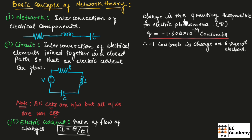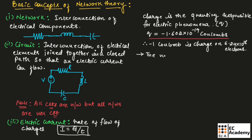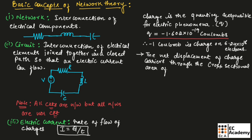Charge is the quantity responsible for electric phenomena and it can be denoted as Q. A charge will have a value of minus 1.602 into 10 to the power of minus 19 coulombs. Therefore, we can say minus 1 coulomb is the charge on 6.24 into 10 to the power of 18 electrons. The net displacement of charge carriers through the cross-sectional area of a conductor is known as electric current.